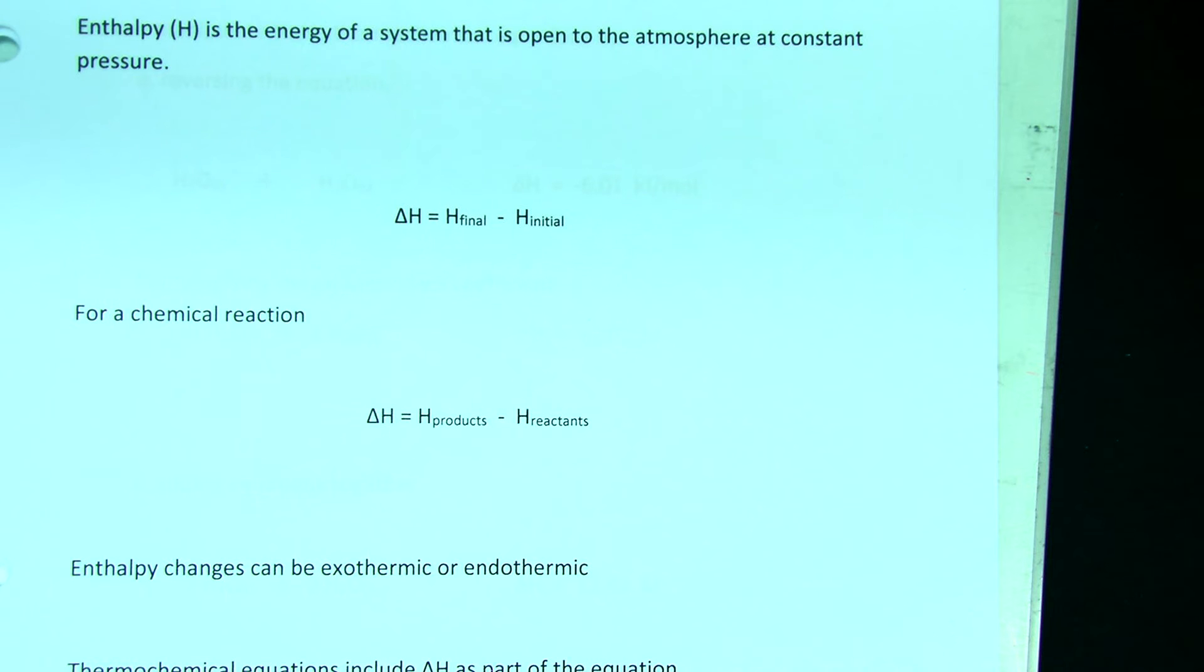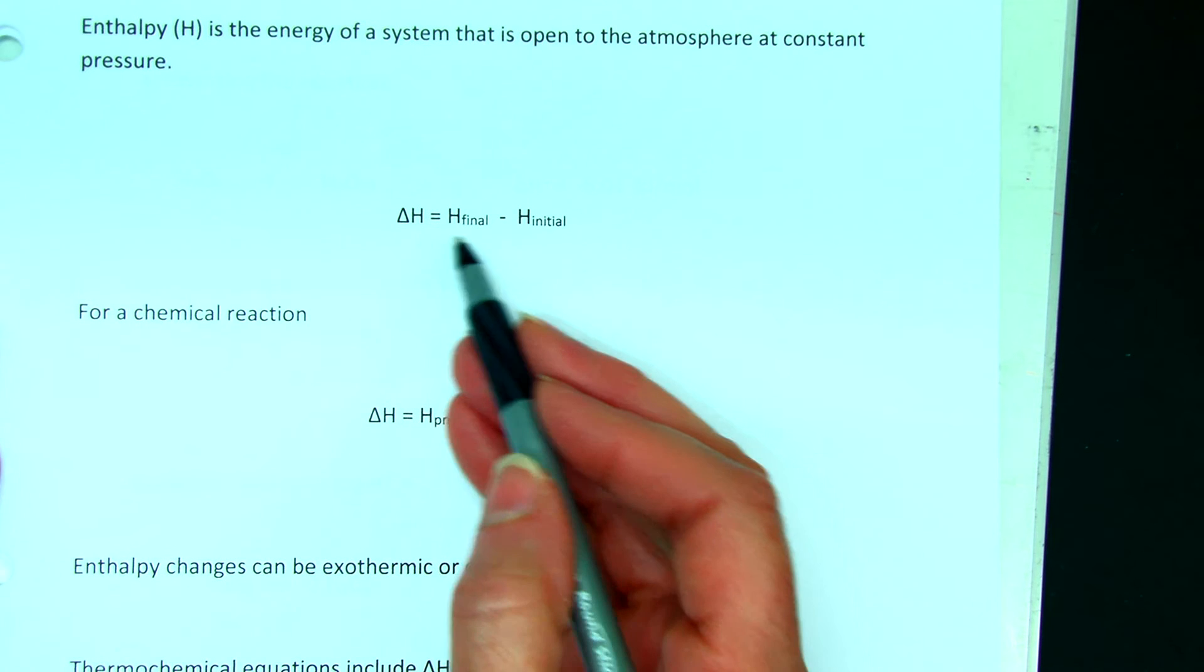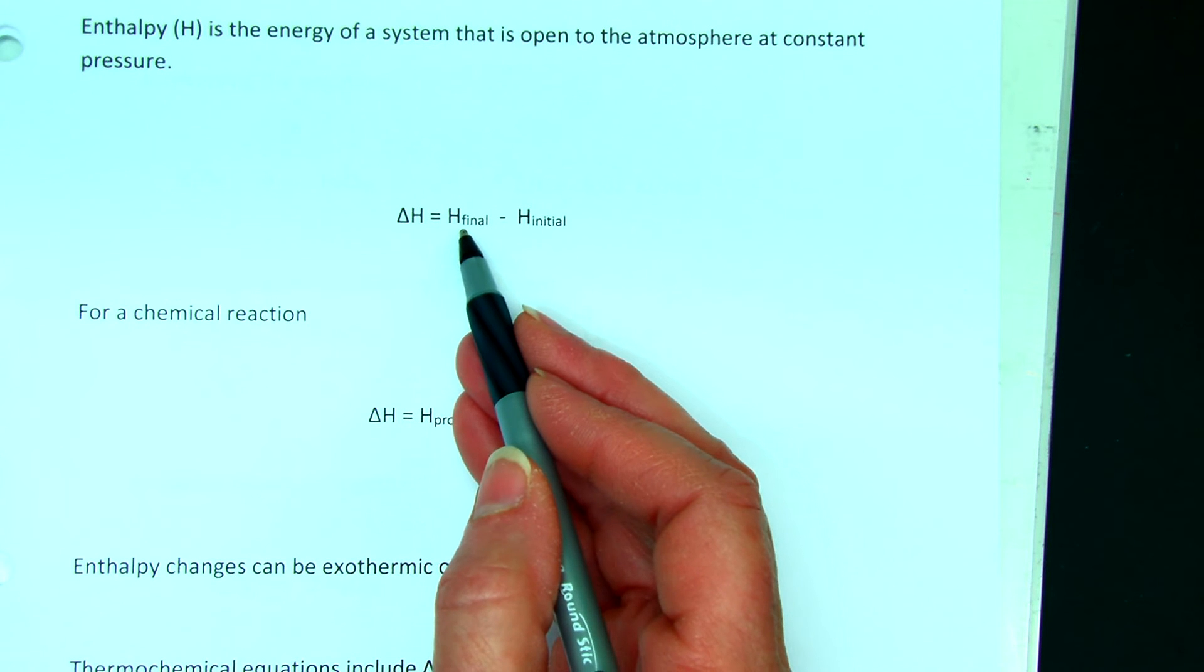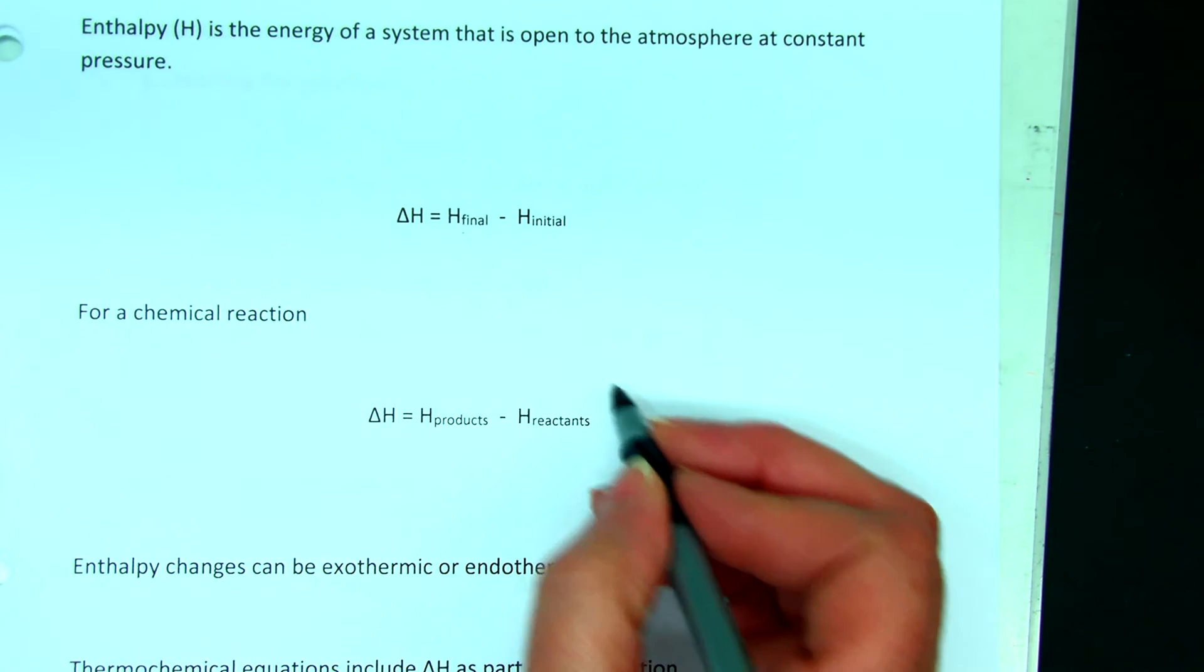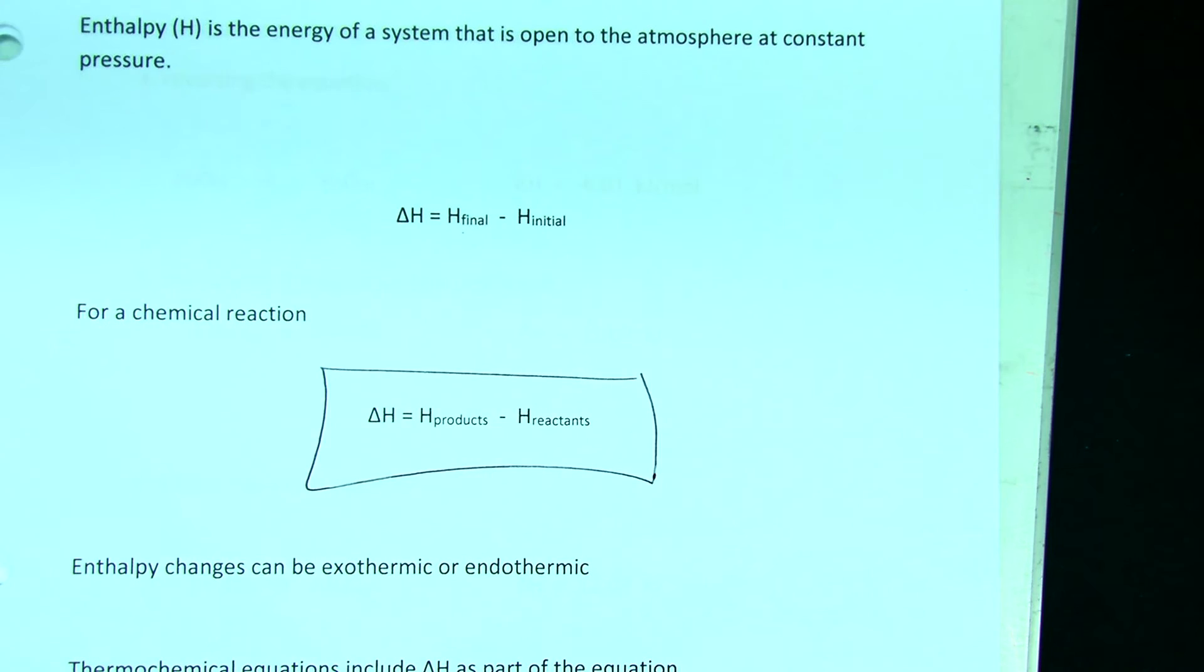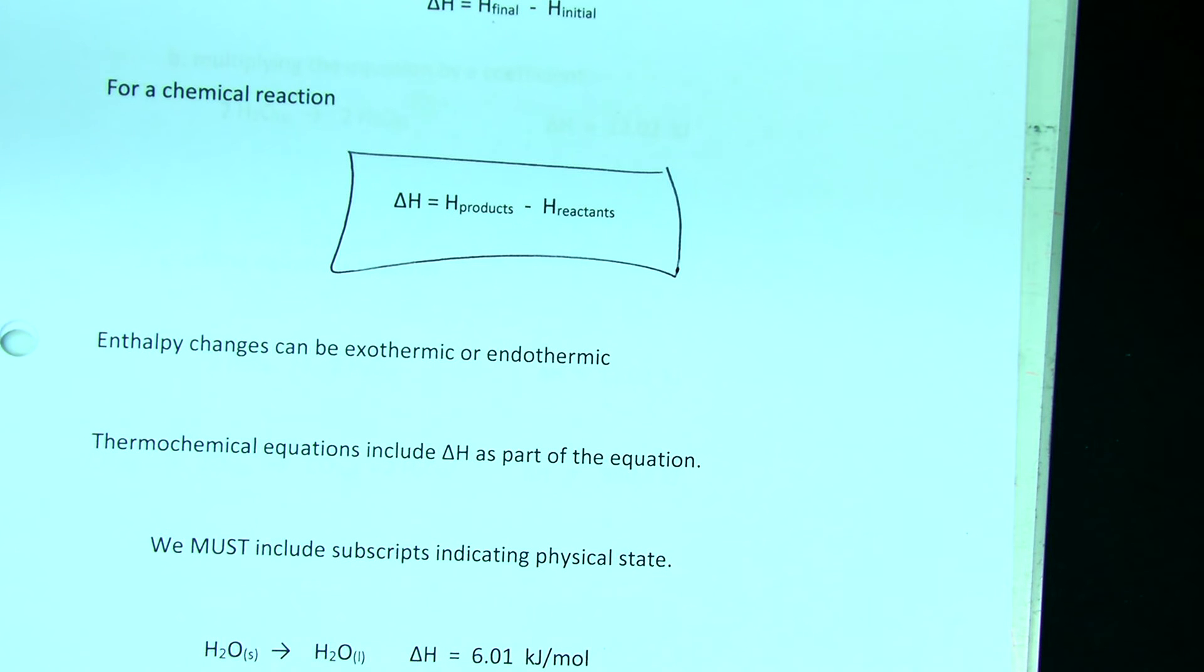So the enthalpy change, change is always final minus initial. So for us, we say our enthalpy change, delta H, is final enthalpy minus initial enthalpy. And for us in chemistry, the final is the products and the initial is the reactants.